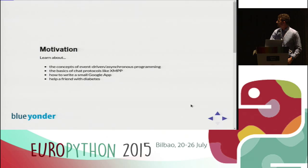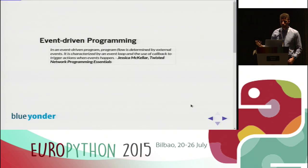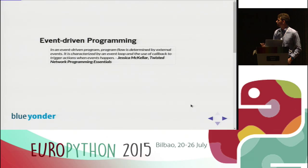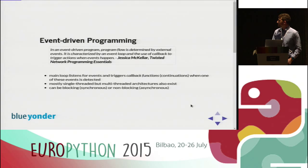The first thing I want to talk about is what event-driven programming is and what it has to do with asynchronous programming. From Jessica McKellar's 'Twisted Network Programming Essentials': in an event-driven program, program flow is determined by external events. It is characterized by an event loop and the use of callbacks to trigger actions when events happen. An event could be a user action or a message received over a network, and callbacks are predefined actions triggered by those events.